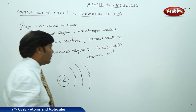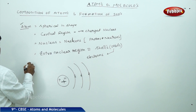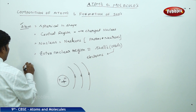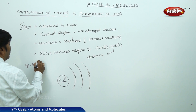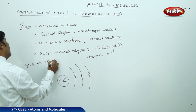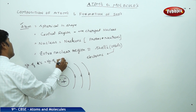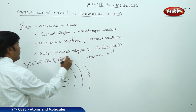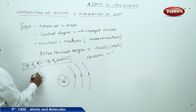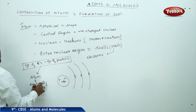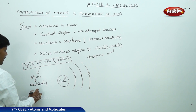What we are able to understand is, if you take any atom, the number of electrons is equal to the number of protons. This condition is satisfied when the atom is electrically neutral.